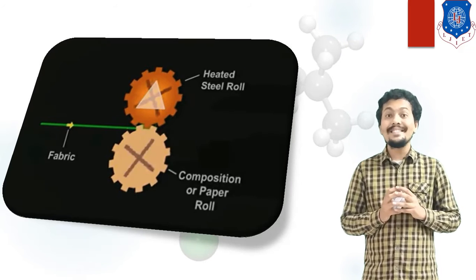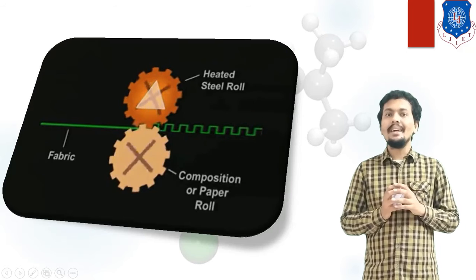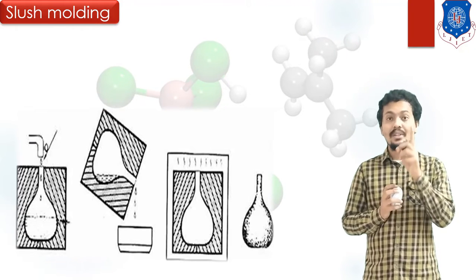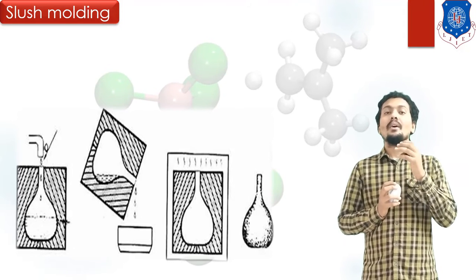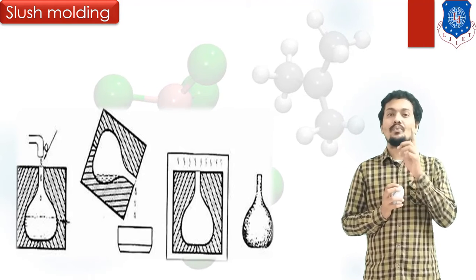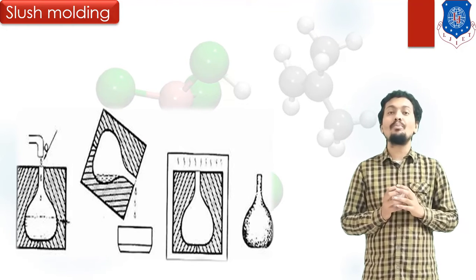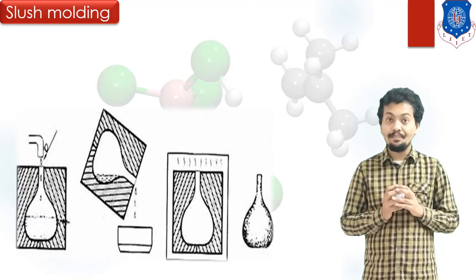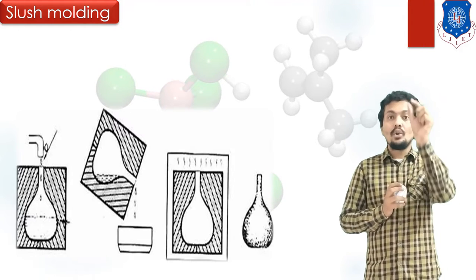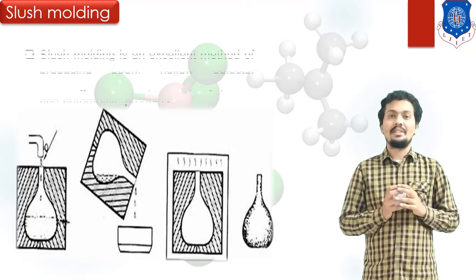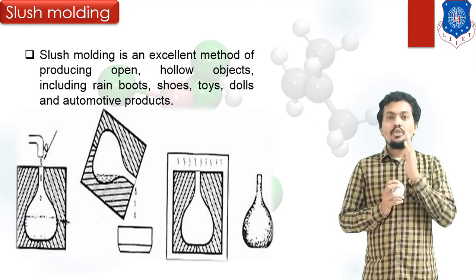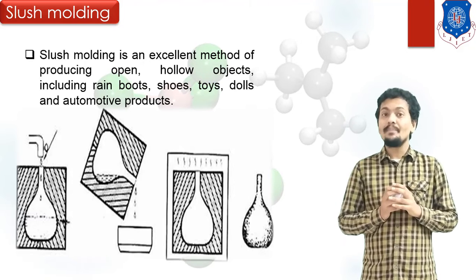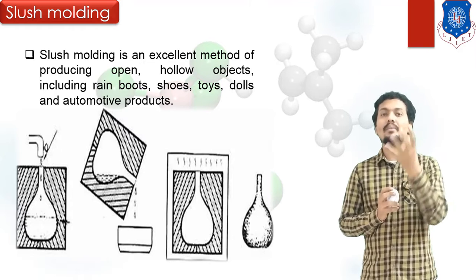After Calendering, let's look at Slosh Molding. This process falls under the category of casting or foundry technology and is very similar to Slosh Casting. In Slosh Molding, our purpose is to make hollow components or toys. The process starts by taking liquid or molten plastic in some vessel — this is Step 1.